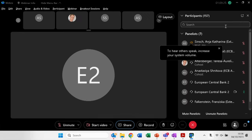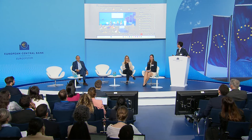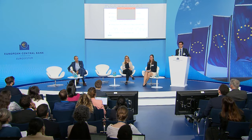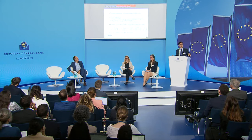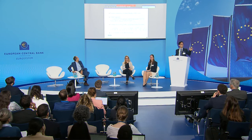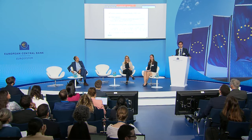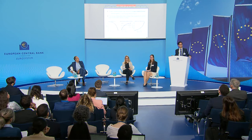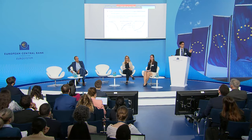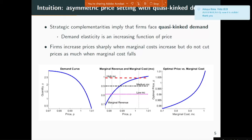What's so special about the Kimball world? Let me give you the intuition in one slide — if you understand this slide, you've understood 95% of the paper. With Kimball aggregation, the price-setting problem of monopoly price setters becomes asymmetric. In particular, it has a feature that once you work with Kimball, the price-setting problem becomes quasi-kinked in terms of the demand curve implications.